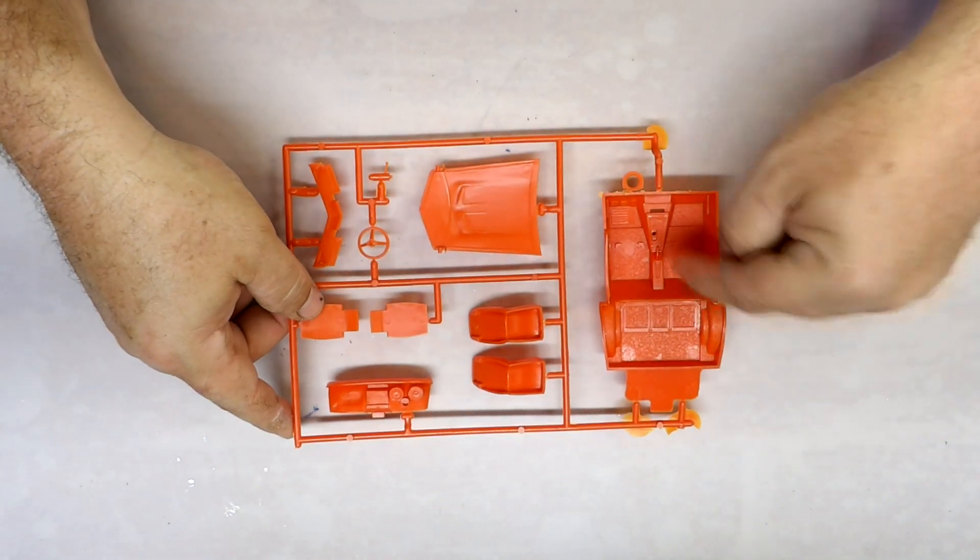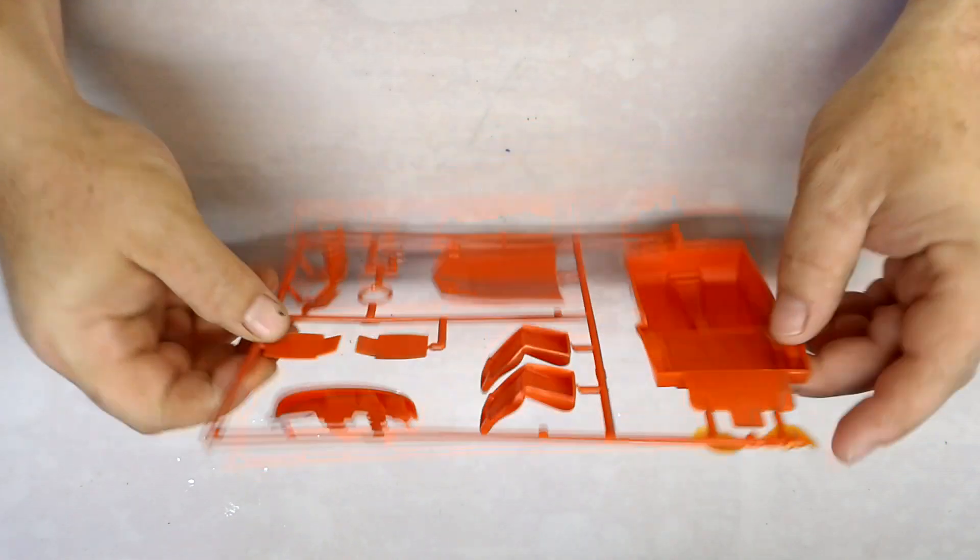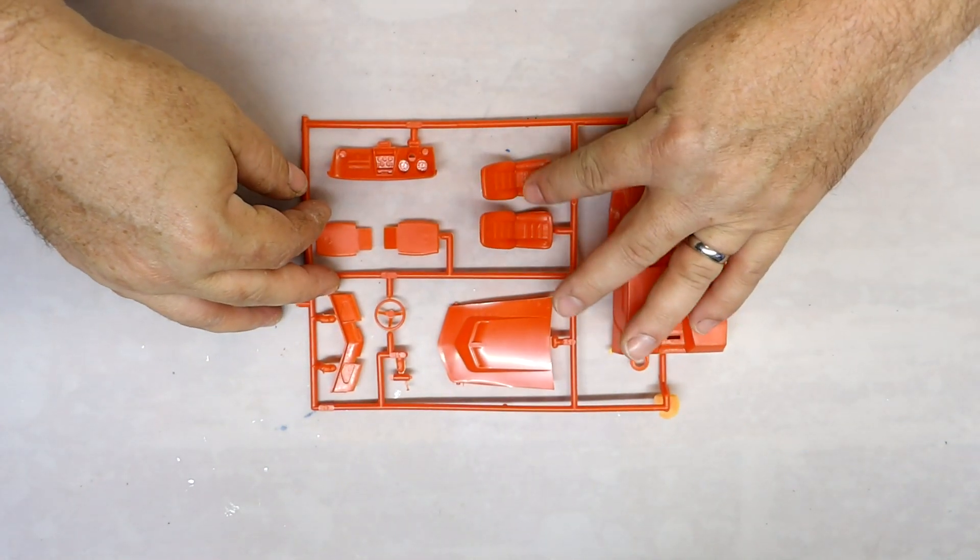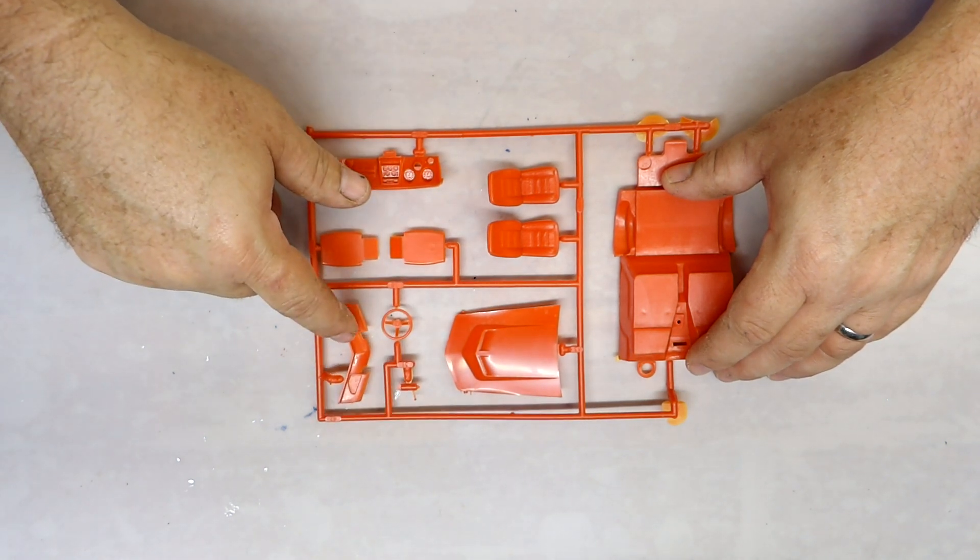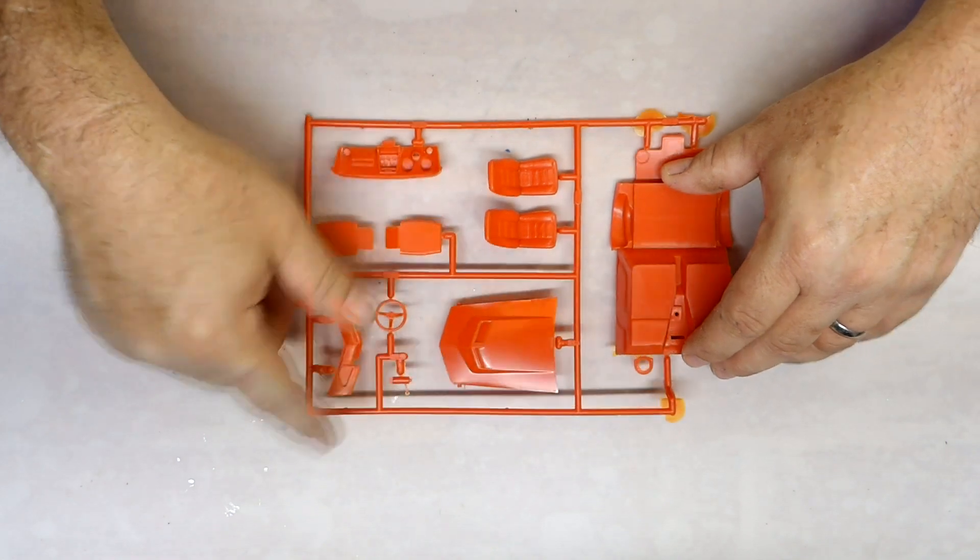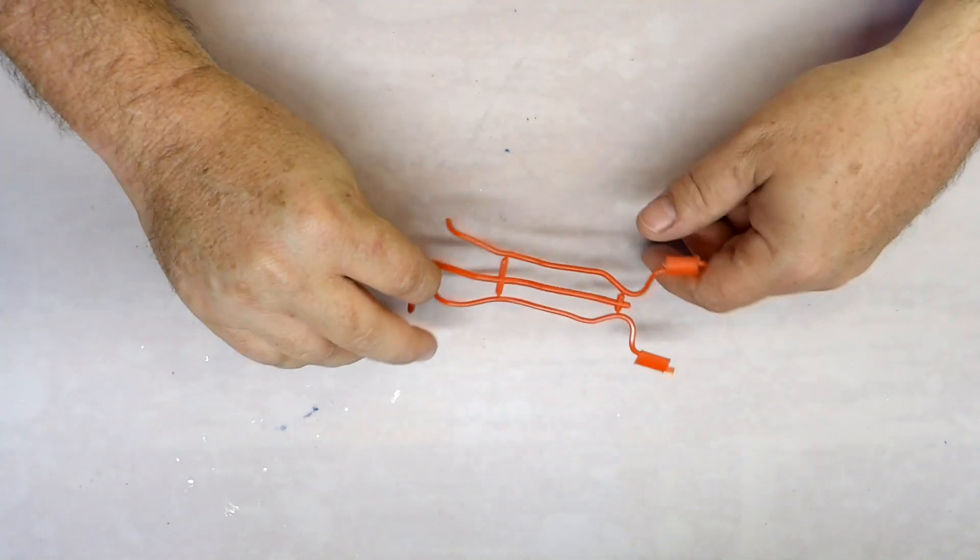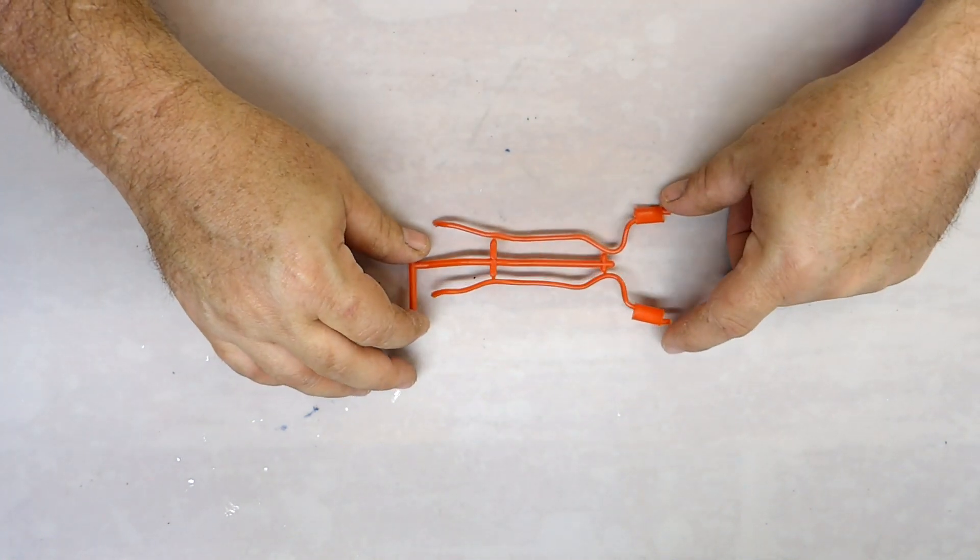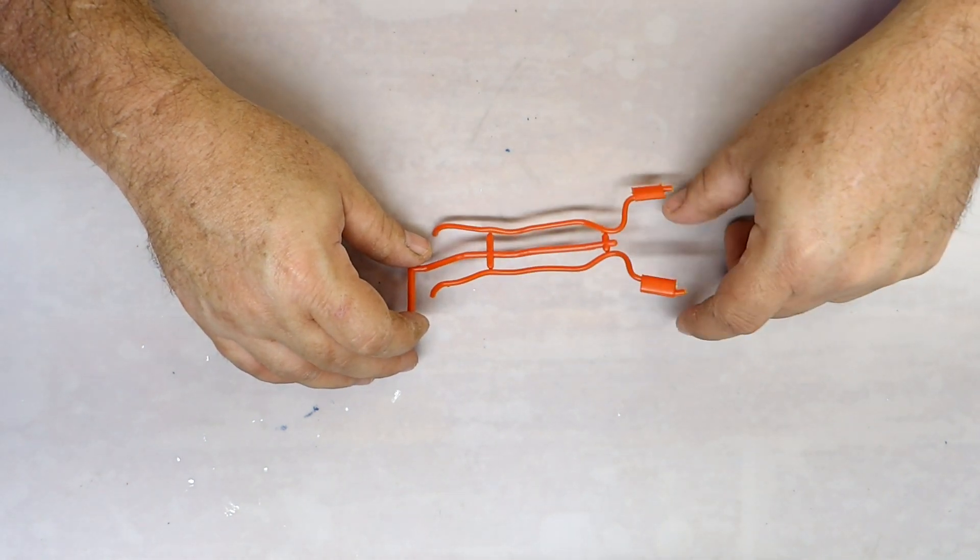This one's got the interior tub on it. Here's the bucket seats, dash, seat backs, front chin spoiler set up here, the hood, steering column and steering wheel. Here's the dual exhaust, looks like it's all separate from front to back, so that's good.